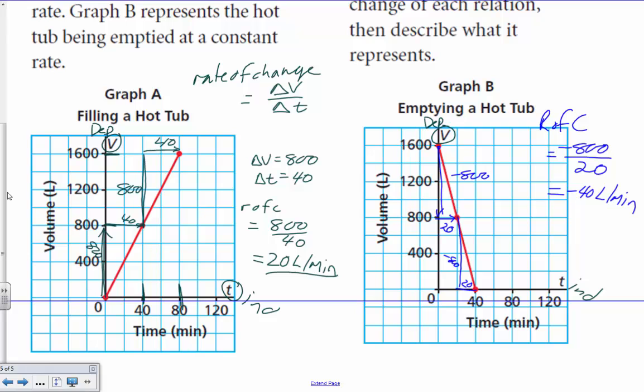So, what we end up from this, if we were to describe it. Graph A, we're filling a hot tub at a rate of 20 liters per minute. Then, we're emptying the hot tub. And it's going to empty at a rate of 40 liters per minute. So, the amount of water in there is going down. Until here, when it's at zero liters of water left.